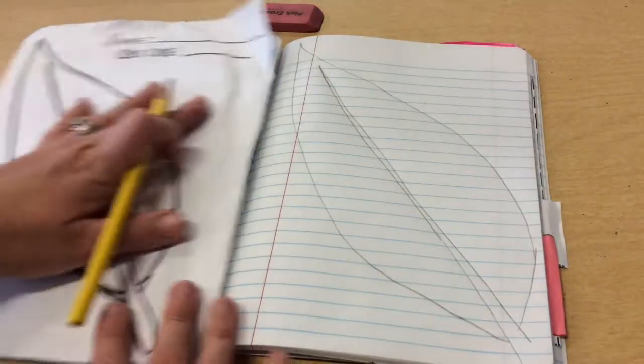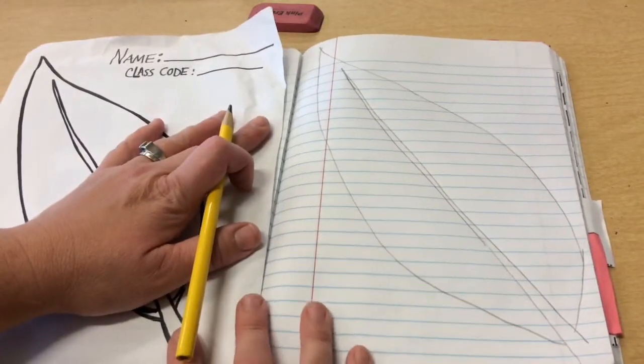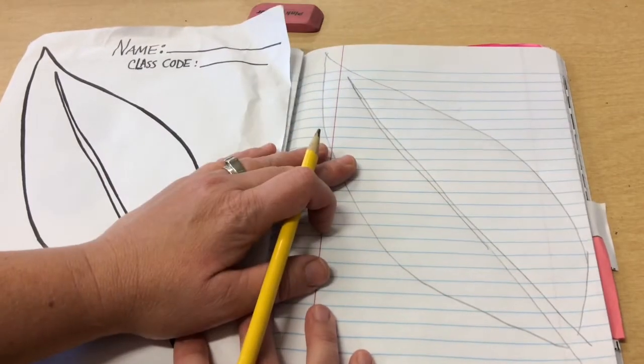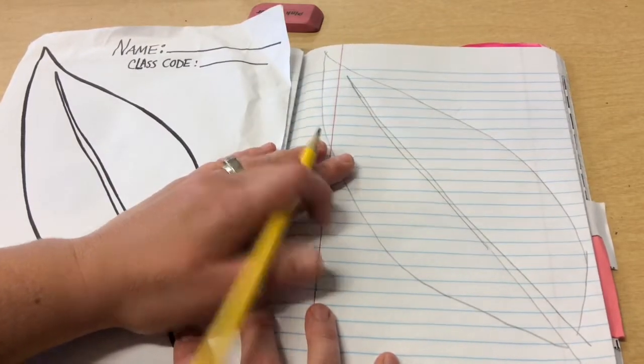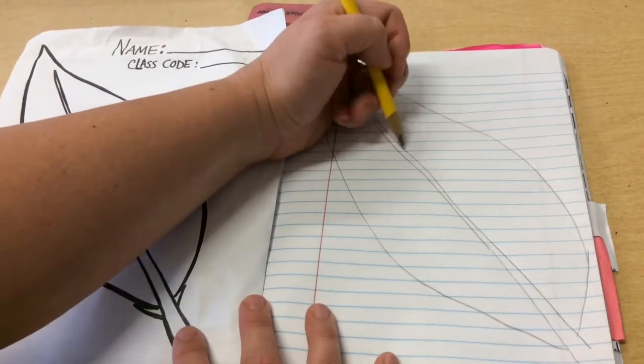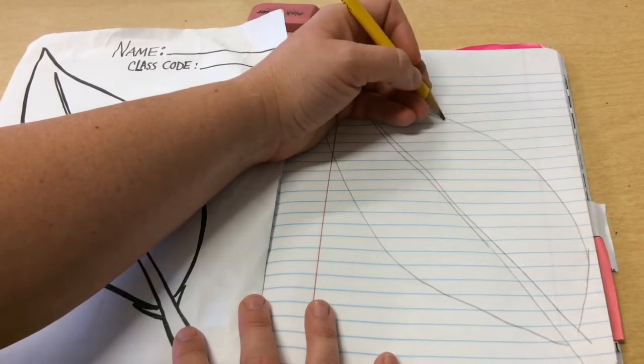So once I have that done, I can take that out. And now I'm ready to begin. The first thing you want to practice is your name. You're going to want to write your name inside one of these feather sides.